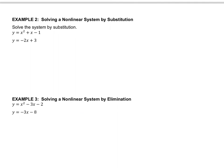Now let's look at one with substitution, and remember the substitution technique is when you take one equation and you plug it into the other. So what we're going to do is since this equation equals y, then down here instead of y, we're going to plug in that expression. So we're going to get x squared plus x minus 1 equals negative 2x plus 3.